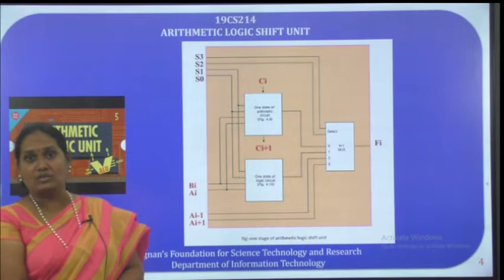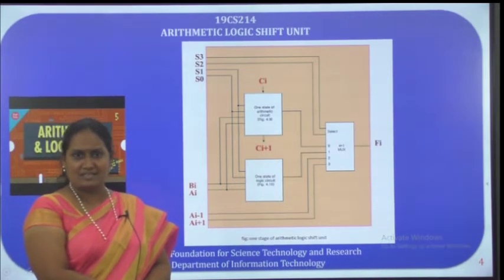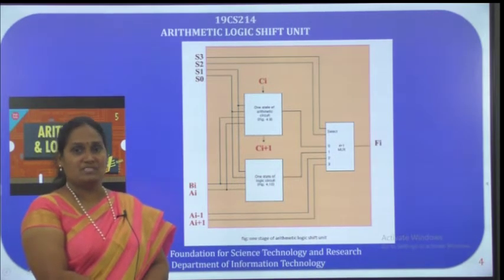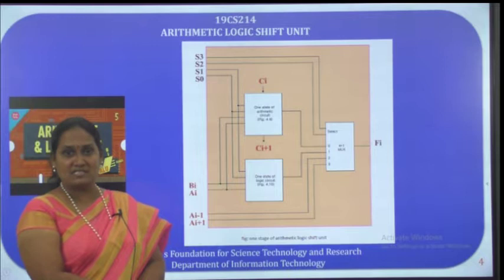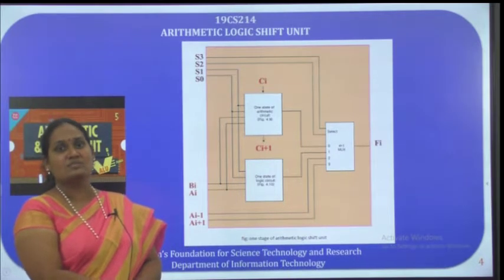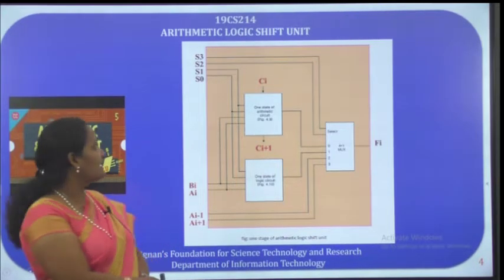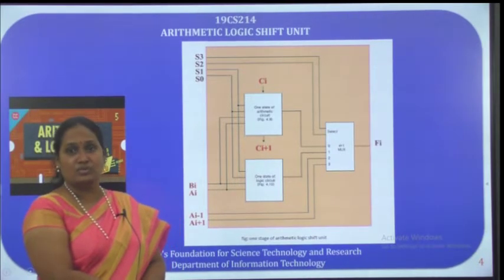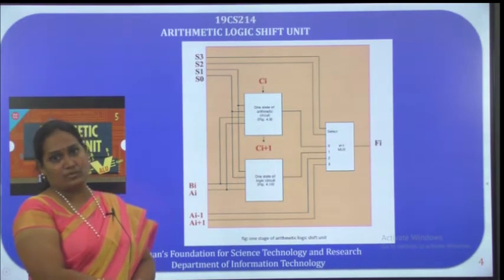For arithmetic operations, one circuit; for logic operations, one circuit; for shift operations, one circuit; for branch operations, another circuit. If you maintain different circuits for each category of operations, the circuit becomes complex and expensive. That is why we have a single circuit — the arithmetic logic shift unit — which performs all arithmetic operations, logic operations, and shift operations.